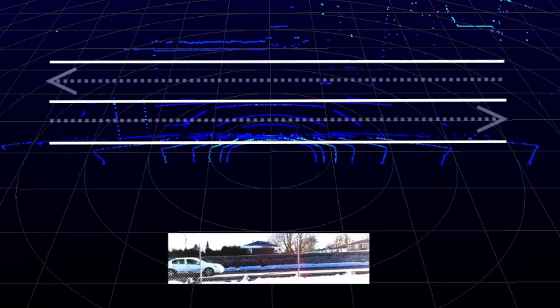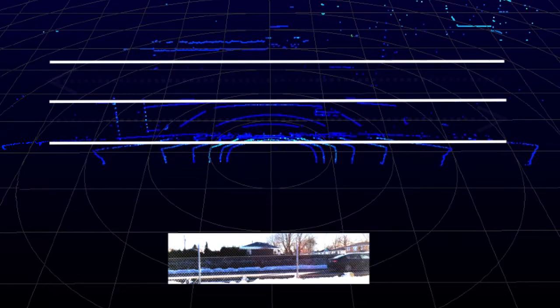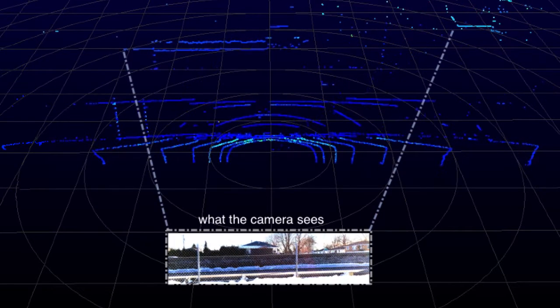A cell phone camera was mounted below the VLP 16 to visually compare the results. To match the VLP scan lines with the visual image from the cell phone camera, stationary objects are recognized.